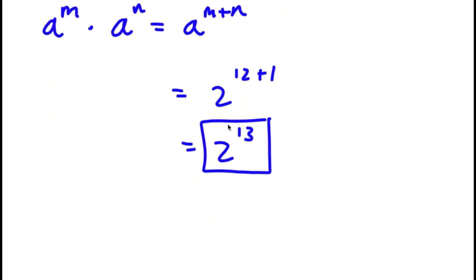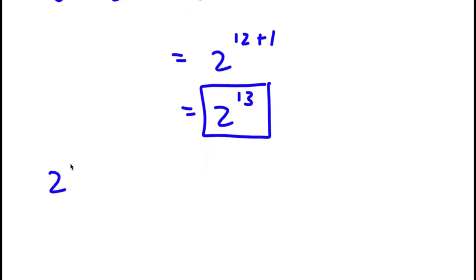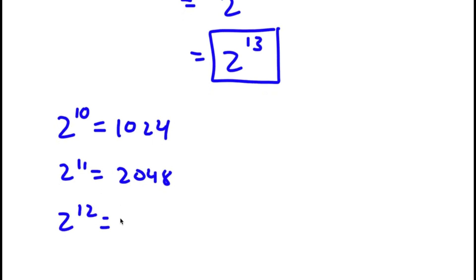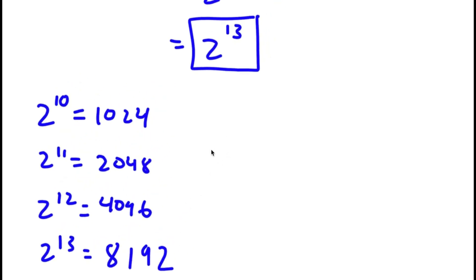Now I'm actually going to go ahead and simplify. We know that 2 to the power of 10 is equal to 1,024. So 2 to the power of 11 is going to equal double of 1,024, which is 2,048. And 2 to the power of 12 is double of 2,048, which is 4,096. So 2 to the power of 13 is going to be double of 4,096, which is 8,192. So 8,192 is my answer.